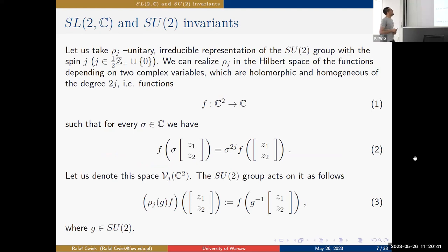Let us define representations of the SU(2) group. ρ_j is a unitary irreducible representation of SU(2) with spin J, where J is a half-integer. We can realize this representation in the Hilbert space of functions depending on two complex variables which are holomorphic and homogeneous of degree 2J, meaning f(σz₁, σz₂) = σ^{2J} f(z₁, z₂). We denote this space V_J(C²), and SU(2) acts by multiplying the spinor (z₁, z₂) by g^{-1}.